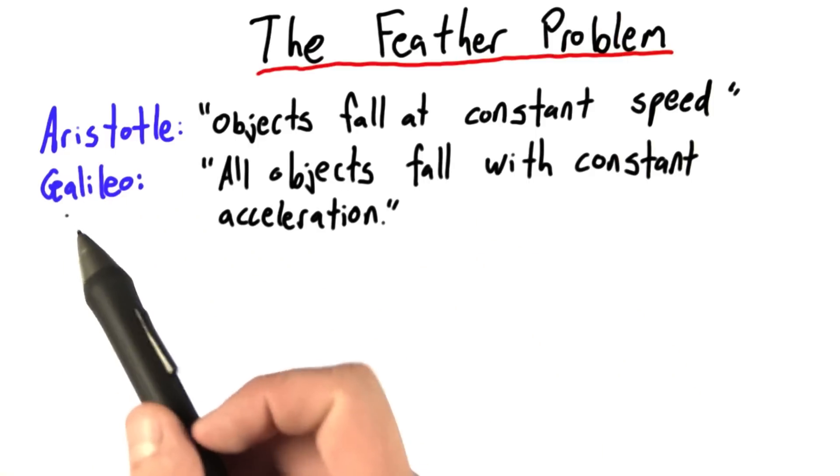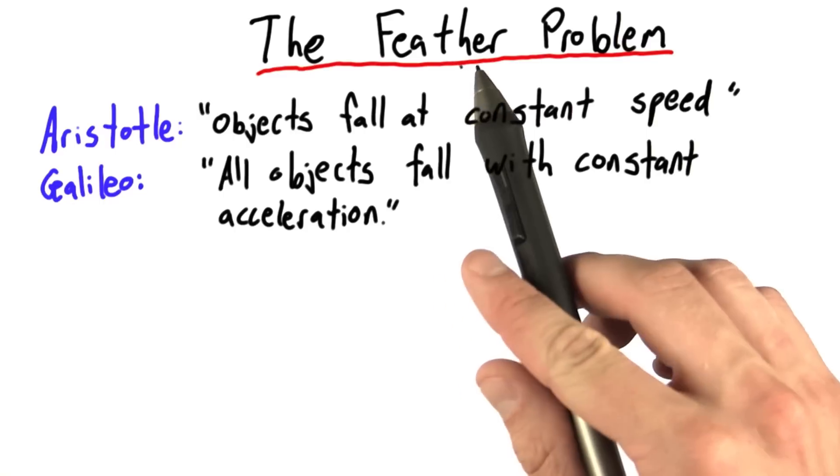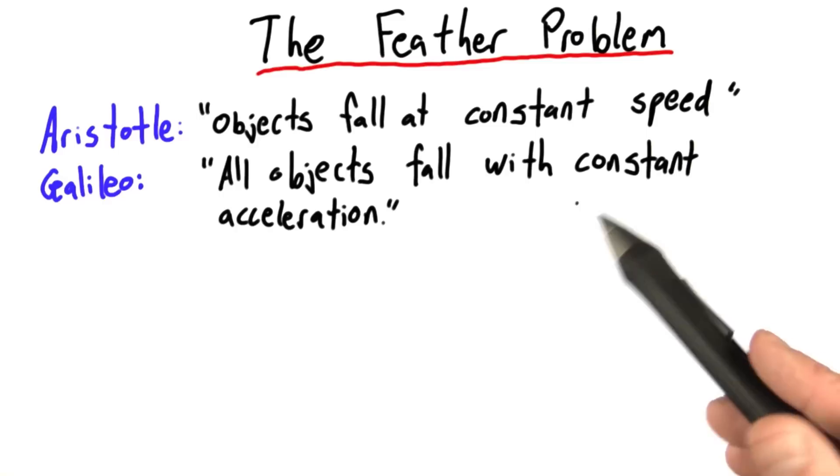We seem to have taken Galileo's side in this debate, but is that the right thing to do? After all, a feather or a sheet of paper seems to fall down at what seems to be a constant rate.